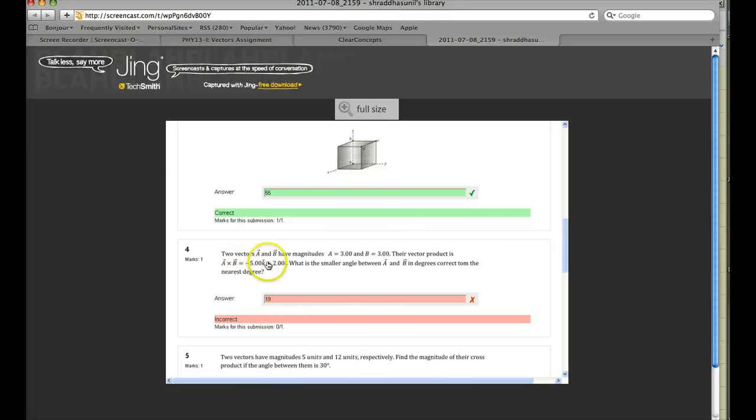The question says two vectors a and b have magnitudes. You've been given their magnitudes. You know nothing about their directions of a and b. Their vector product a cross b is already given to you. What is the smaller angle between a and b in degrees correct to the nearest degree? This is the question.